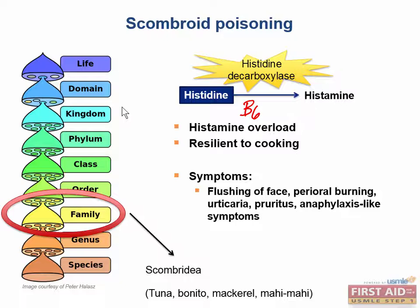Can you think of any drugs we have to treat a histamine overdose? We could use antihistamines — for example, diphenhydramine or loratadine. H1 receptors increase nasal and bronchial secretions, increase vascular permeability leading to flushing of the face, cause contraction of the bronchioles leading to wheezing, and cause pruritus and pain. H2 receptors, on the other hand, are primarily associated with an increase in gastric acid secretion.